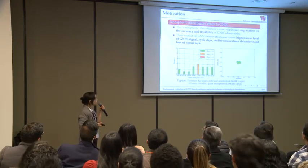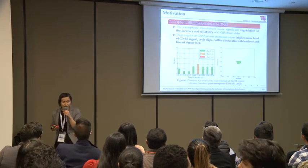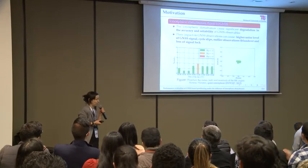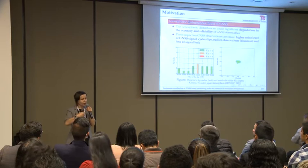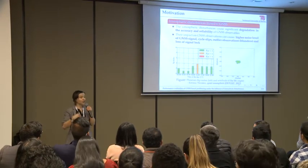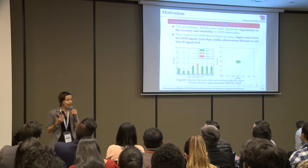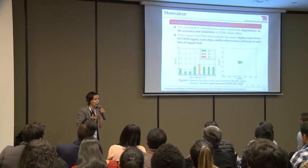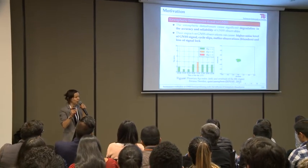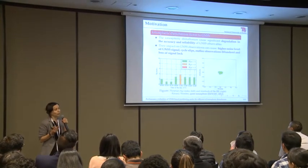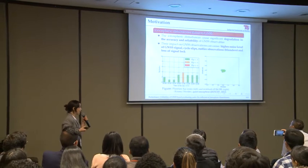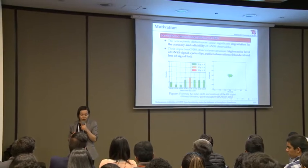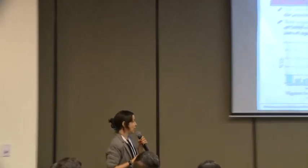Let's look at ionospheric disturbances and their impact on GNSS observation. As you probably know, when the signal crosses the ionosphere, it is delayed — code observations are delayed and phase observations are advanced. This introduces error in our range measurement between receiver and satellite. However, those ionospheric delay errors are systematic, so we can remove or model them relatively easily.